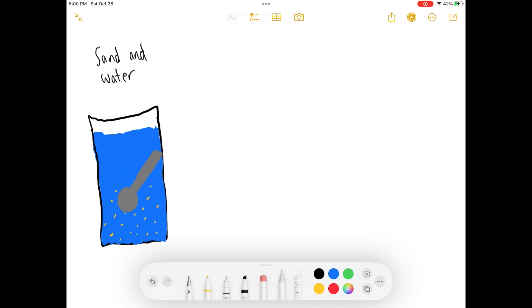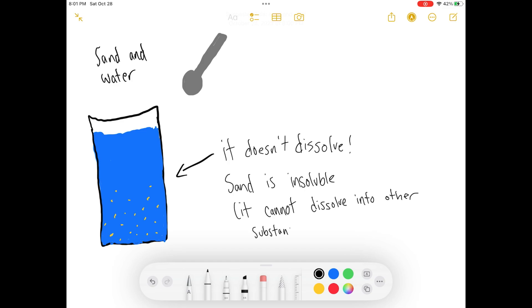And we can see this idea of solubility being a physical property because here we have sand and water. When we try to stir it all up, we can see that nothing changes, which tells us that sand is insoluble, which really emphasizes the idea that not everything is soluble, hence why solubility is a physical property.